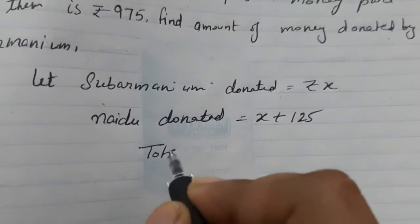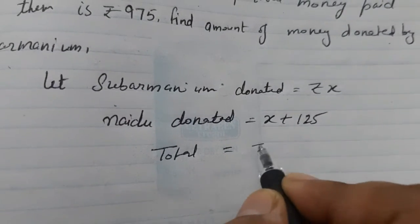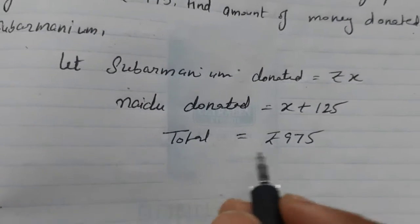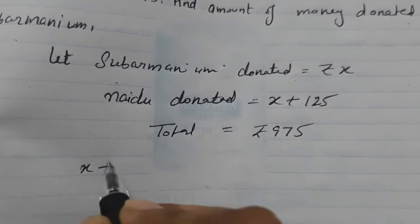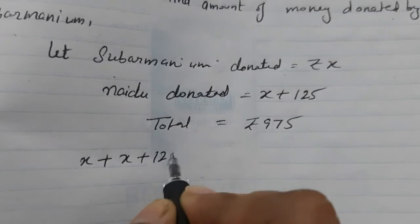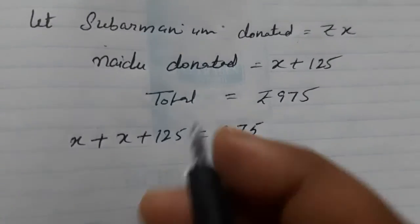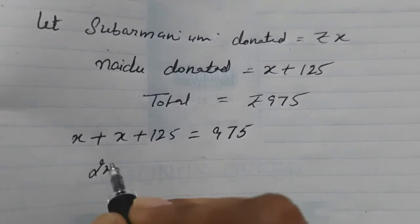And, total money donated is Rs. 975. So, according to the question, we can add both the amounts. X plus X plus 125 is equal to 975. And, from here we can find out X.